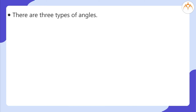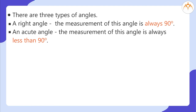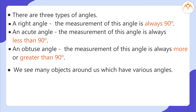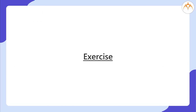What did we learn? There are three types of angles. A right angle — its measurement is always 90 degrees. An acute angle — its measurement is always less than 90 degrees. An obtuse angle — its measurement is always more than 90 degrees. We see many objects around us which have various angles. The measurement of an angle does not change even if you extend the line.